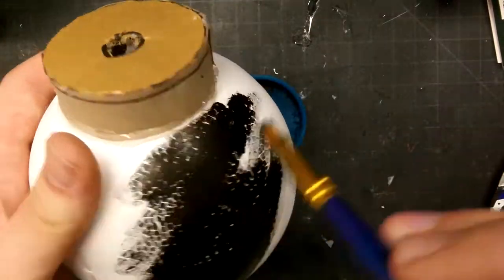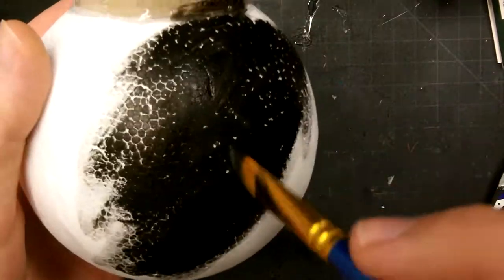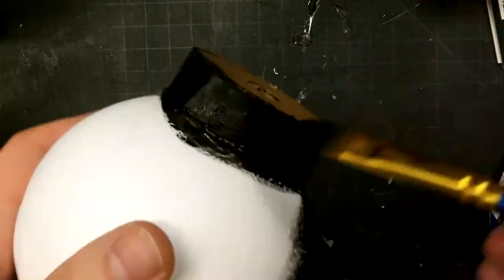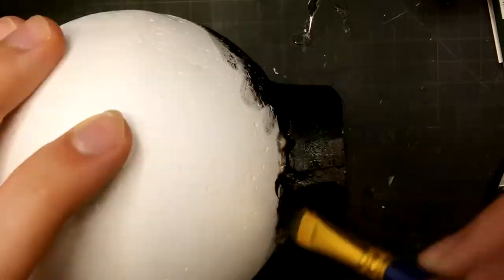Then I painted the whole thing black with black acrylic paint. I did have to do a couple coats just to make sure none of the white of the styrofoam was showing through.